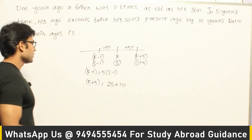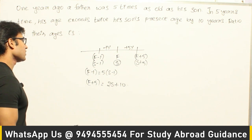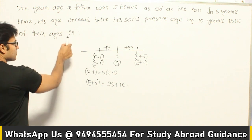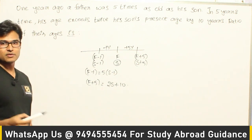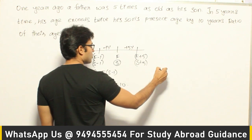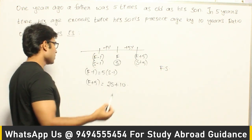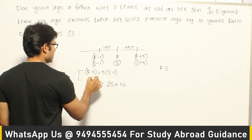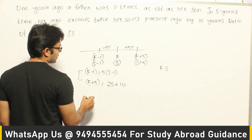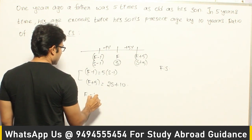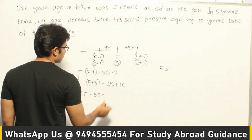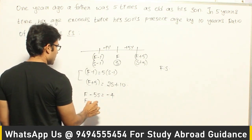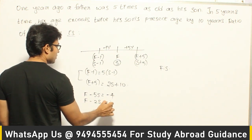So the second equation is: F+5 = 2S + 10. From these two relations, we need to find the ratio of their present ages, i.e., F:S. Simplifying the first equation: F - 5S = -4. Simplifying the second equation: F - 2S = 5.